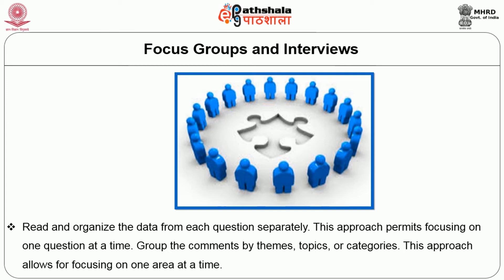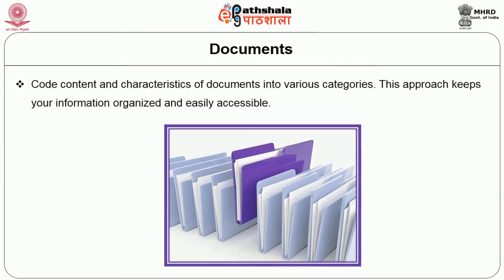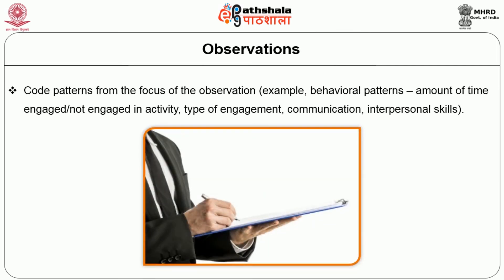This approach allows for focusing on one area at a time. Example: characteristics of tutor, level of preparation, knowledge of content area, availability. Documents: code content and characteristics of documents into various categories. Example: training manual, policies and procedures, communication responsibilities. This approach keeps your information organized and easily accessible. Observation: code patterns from the focus of the observation. Example: behavioral pattern, amount of time non-engaged in activity, type of engagement, communication, interpersonal skills.